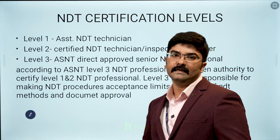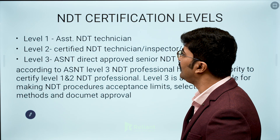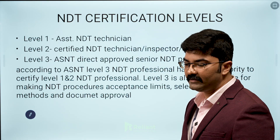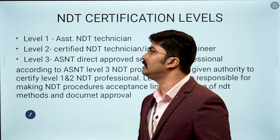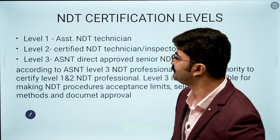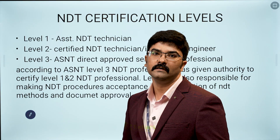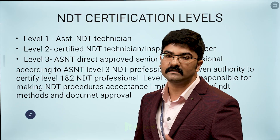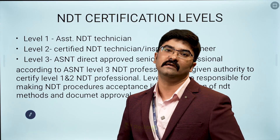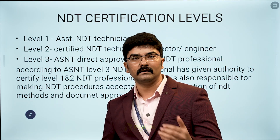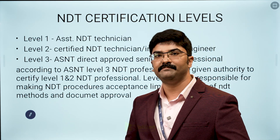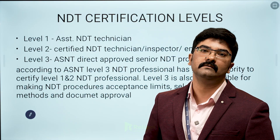In ASNT or even in PCN, we have 3 levels: level 1, level 2, and level 3. Level 1 candidates, if trained, will be working as an assistant technician. If someone has level 2, they will be a certified NDT technician, inspector, or engineer — it depends upon experience and basic qualification. If you are 10th or plus 2, you can initially work as a technician and based on your experience, you can level up to inspector grade.